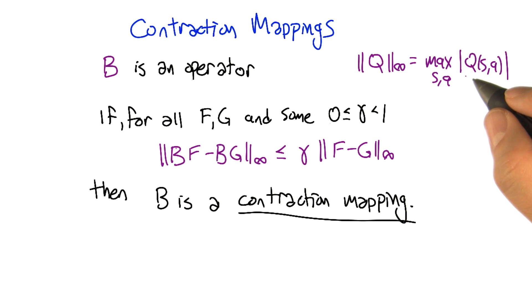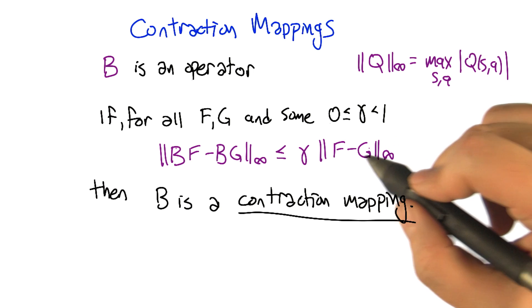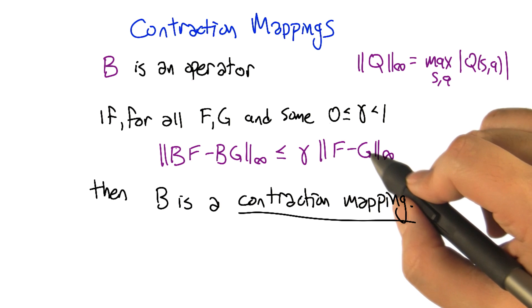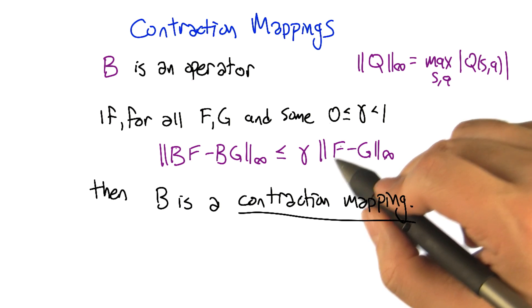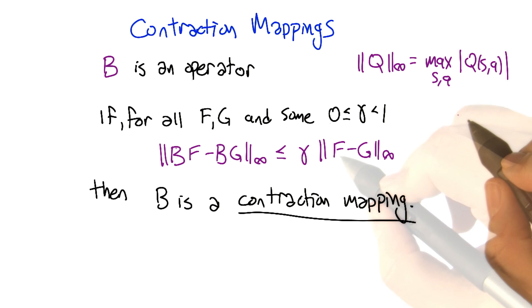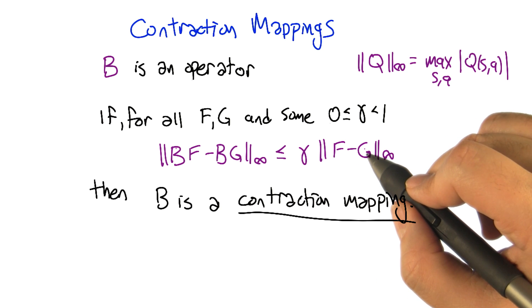Or that it currently has, yeah, that's right. So when we write F minus G max norm, really what it's saying is, what's the biggest difference in Q values between F and G? And this is corresponding Q values, right? So F minus G is saying, what's the biggest difference between these two Q functions in any state action pair?